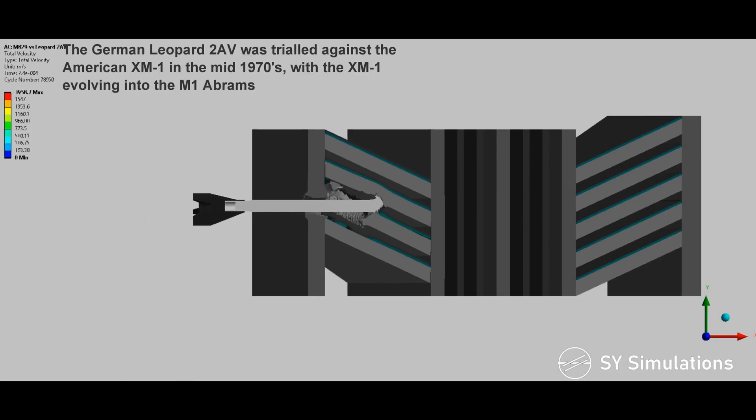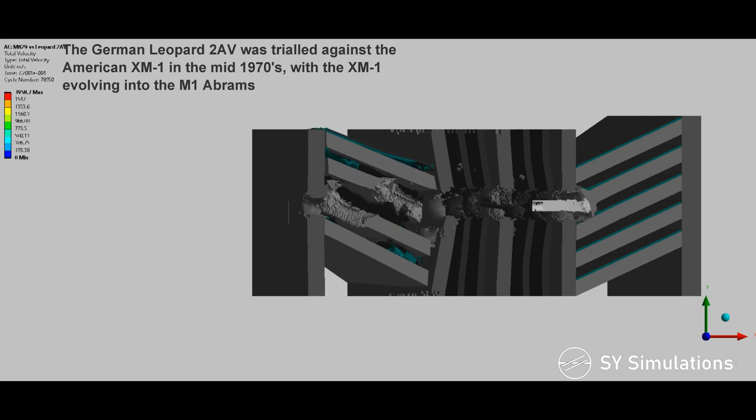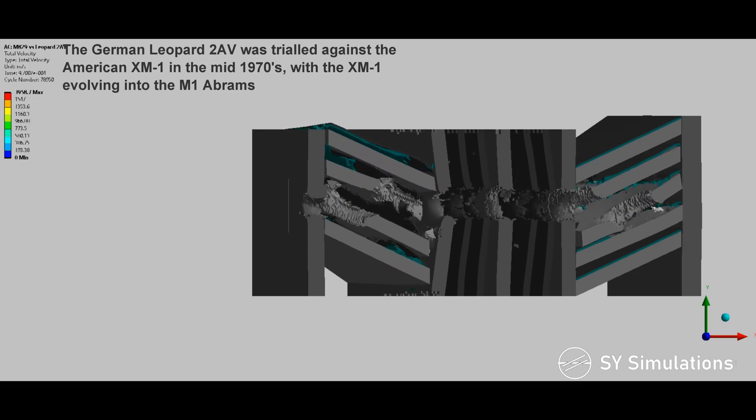The German Leopard 2AV was trialed against the American XM-1 in the mid-1970s, with the XM-1 evolving into the M1 Abrams.